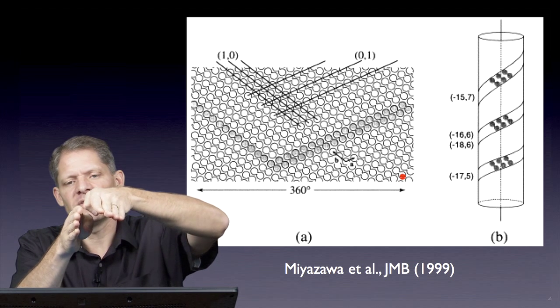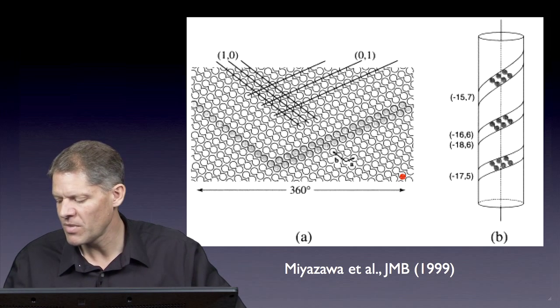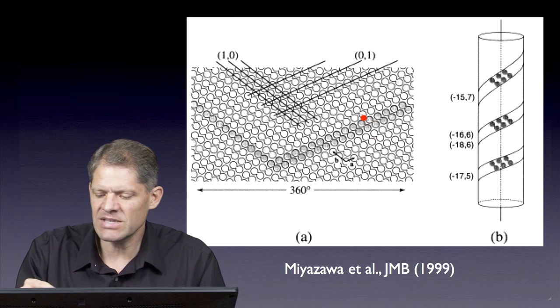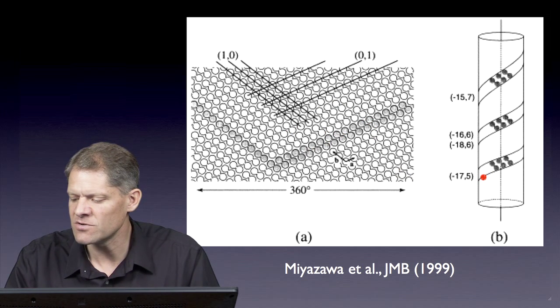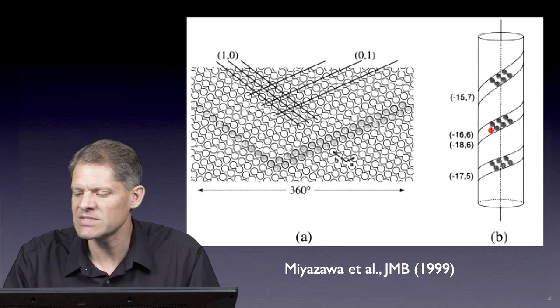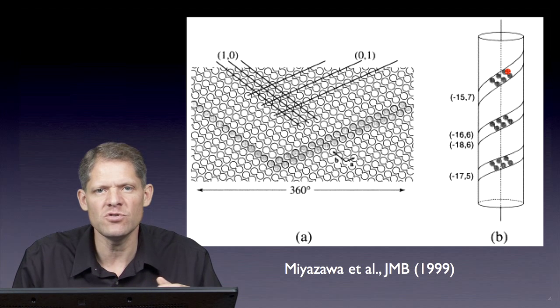You can make the cut and it'll seal together with different pitches between them. That's being illustrated here—a single lattice can give rise to helical families of minus 17,5, minus 18,6, minus 16,6, et cetera. Different families can arise from the same 2D crystal.